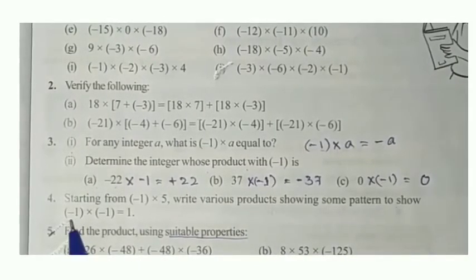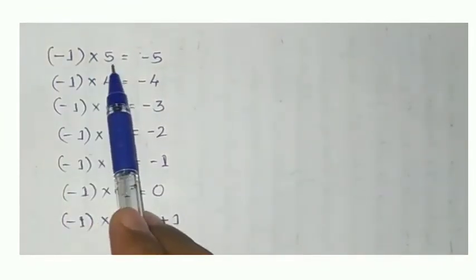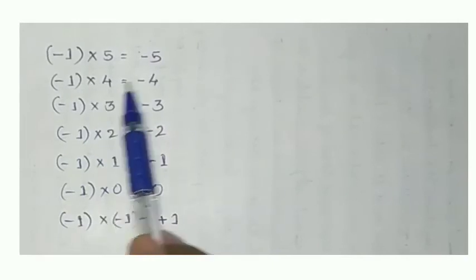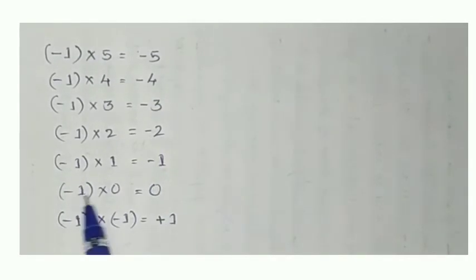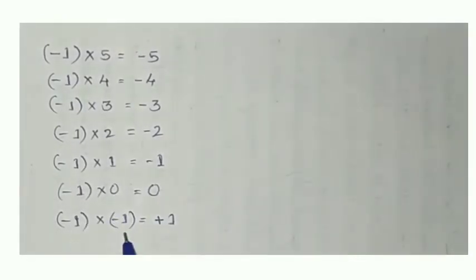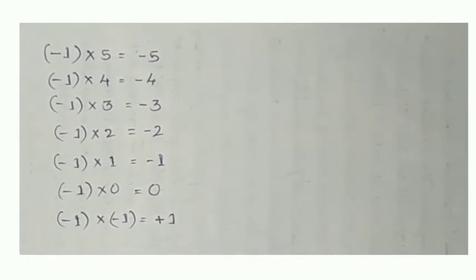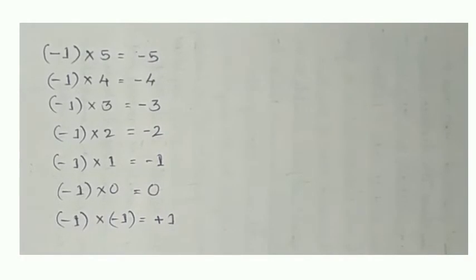In fourth question: starting from minus 1 into 5, write various products showing some pattern to show minus 1 into minus 1 equals 1. Starting with 5: minus 1 into 5 gives minus 5; minus 1 into 4 gives minus 4; minus 1 into 3 gives minus 3; minus 1 into 2 gives minus 2; minus 1 into 1 gives minus 1; minus 1 into 0 gives 0. When it comes to minus 1 into minus 1, we get plus 1. By this pattern we can conclude: whenever we multiply two negative integers we get a positive integer, and whenever we multiply a negative and positive we get a negative integer.